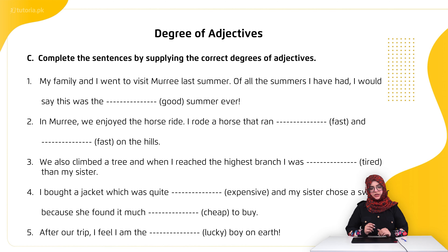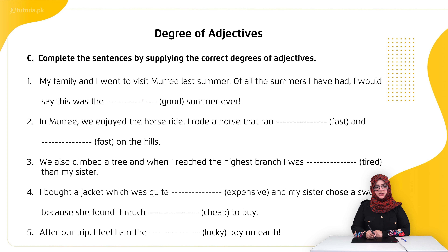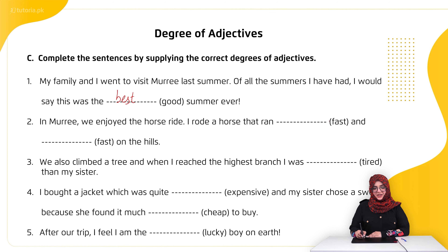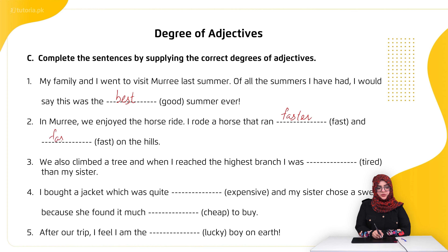Let's move on to the exercise: complete the sentences by supplying the correct degrees of adjectives. First sentence: 'Of all the summers I have had, I would say this was the best summer ever' — because we use 'the' with superlative degree. Second: 'I rode a horse that ran faster and faster on the hills' — we use comparative degree in both places here.